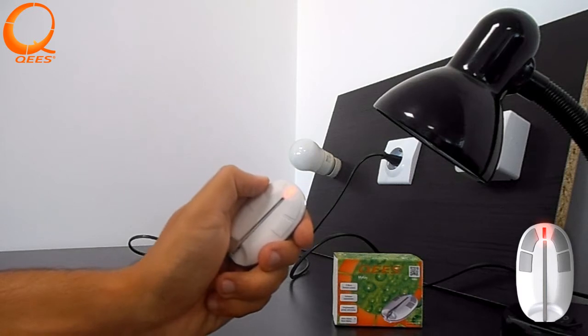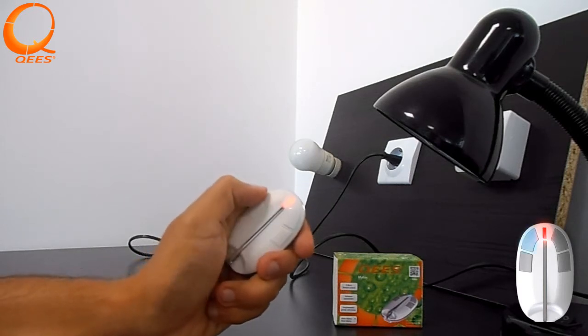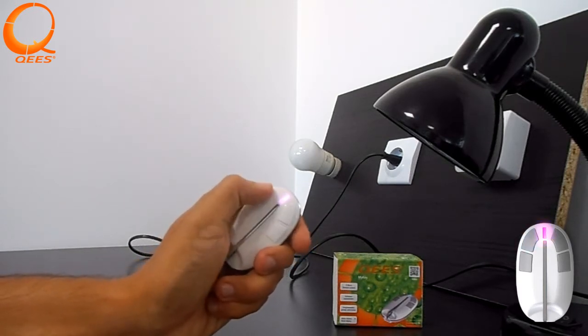When you reach the menu that you need, you can confirm your selection with a long press on button 2. Let's take green for example.